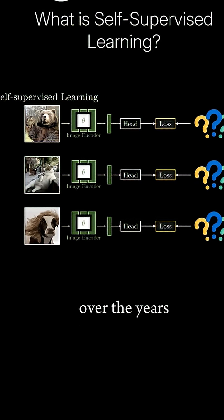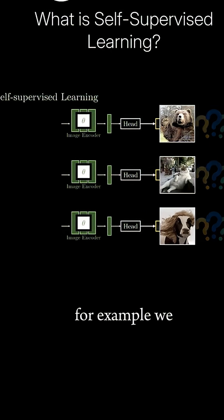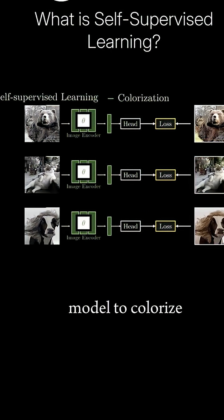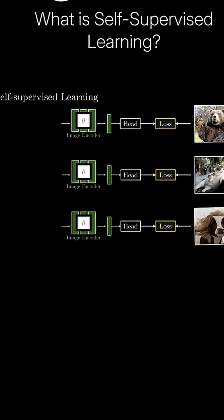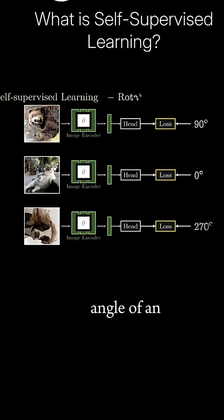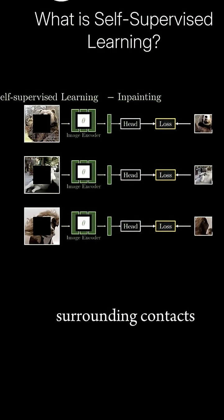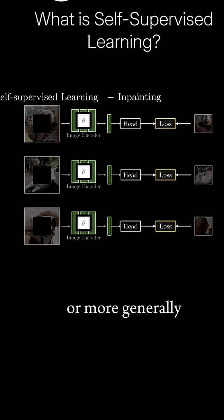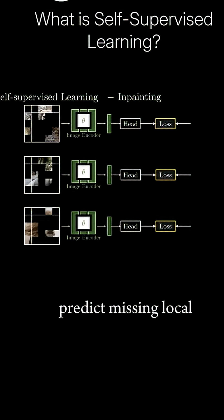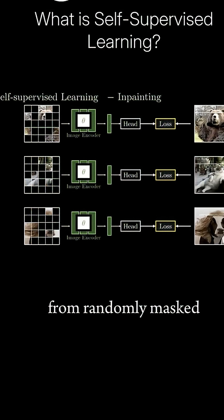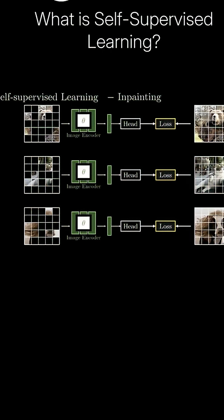Over the years, researchers have developed creative strategies for self-supervised learning. For example, we can train the model to colorize an image, predict the rotation angle of an image, inpaint the center patch from the surrounding context, or more generally, predict missing local patches from randomly masked input images.